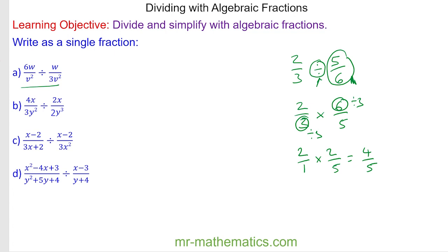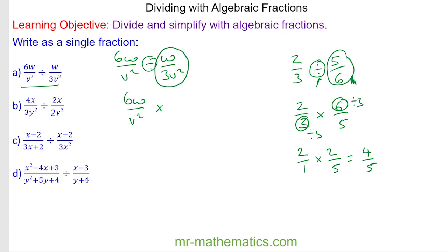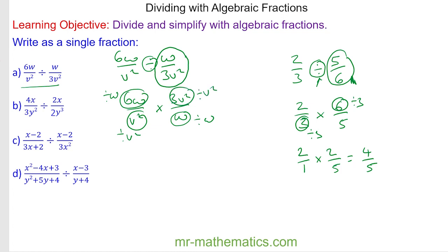We're going to do the same for question a: 6w over v squared divided by w over 3v squared. First, we change the divide to times, so 6w over v squared multiplied by the reciprocal of w over 3v squared — we flip it upside down. Now we can cross-simplify the w's, and the v squared terms, leaving us with 6 over 1 multiplied by 3 over 1, which makes 18.